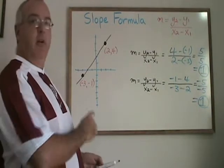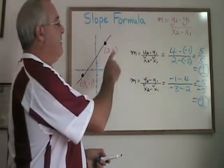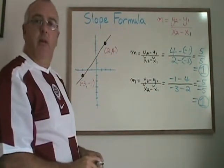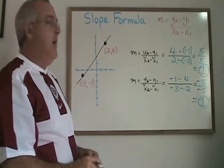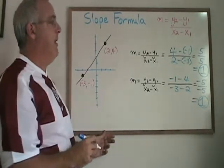This shows that regardless of which point I call point 1 and which point I call point 2, I can plug the x and y coordinates of the two points into the slope formula and I will get the correct slope either way. Regardless of which point I call point 1, the slope of this straight line is 1.